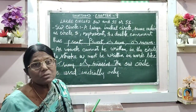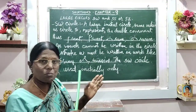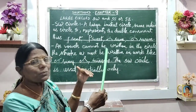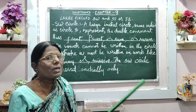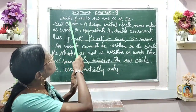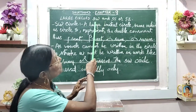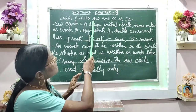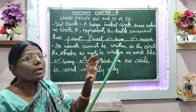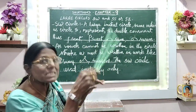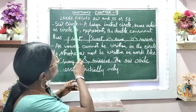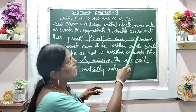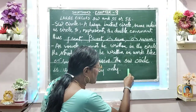Welcome to the shorthand class, Chapter 9. As we are progressing with a little bit advanced content, I am trying to give you less to make you understand more. Let us now have large circles SW and SS or SZ. These SW, SS, and SZ are going to be represented with a big circle. The SW circle is a large initial circle, done in the initial position. Same motion as we do the small S circle, but it is a large circle.